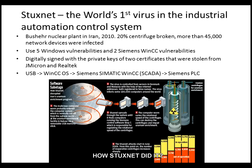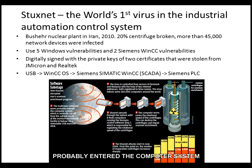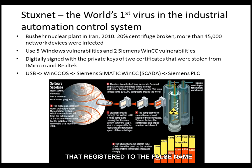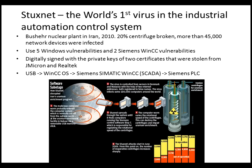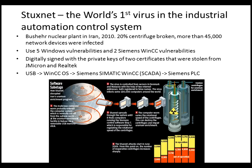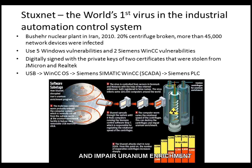How did Stuxnet work? The malicious computer worm likely entered computer systems — normally cut off from the outside world — via USB memory stick. The virus was controlled from Denmark and Malaysia using two IP addresses registered to false names. It then infected 100,000 computers around the world. Stuxnet spread through systems until it found computers running Siemens control software responsible for regulating the rotational speed of centrifuges. The worm varied that speed to destroy the centrifuges and impair uranium enrichment.